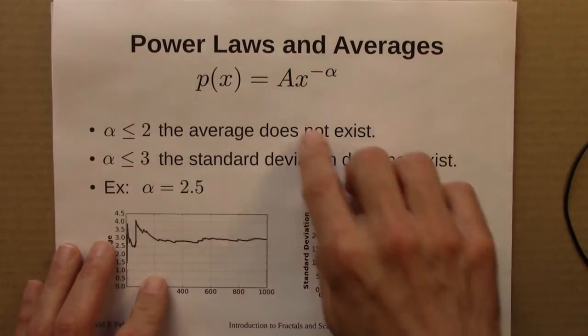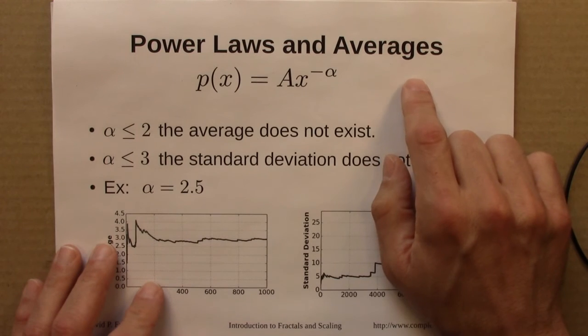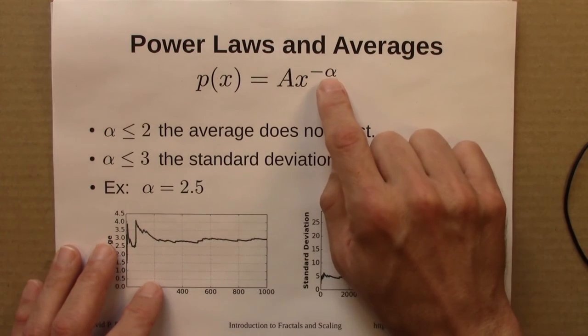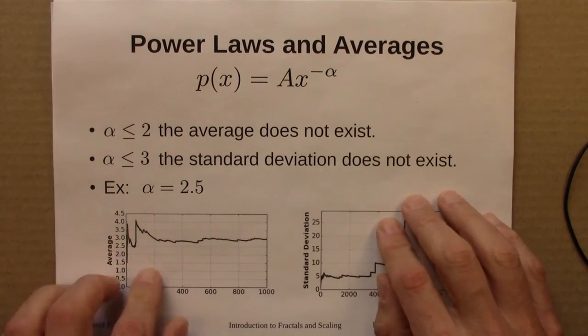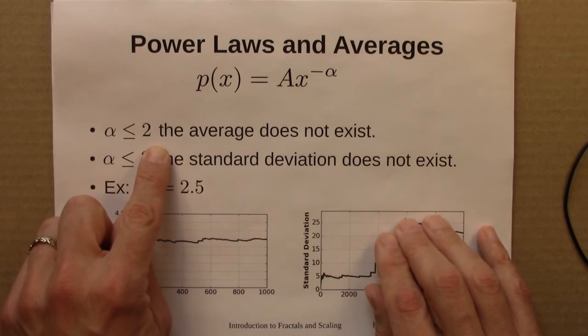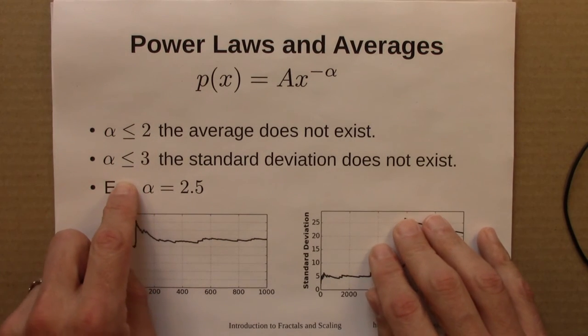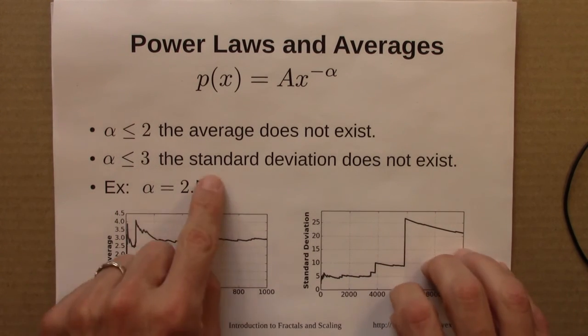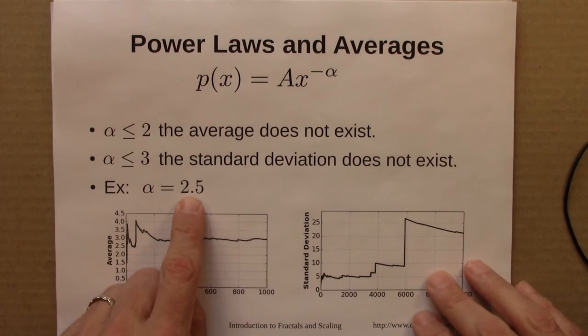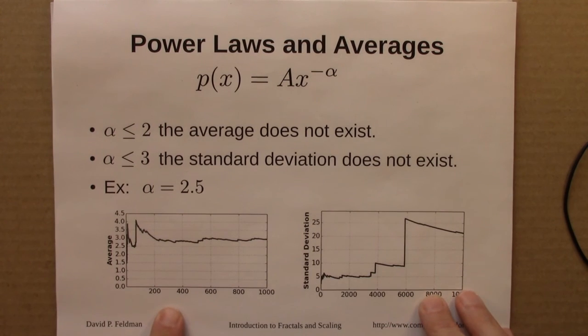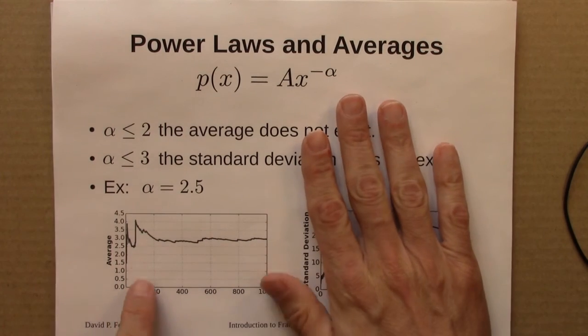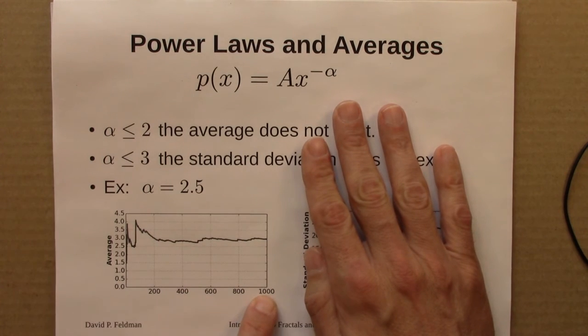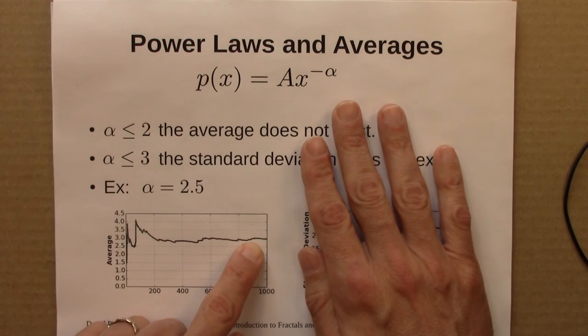And then I said, turns out that power laws have a similar property. It depends on alpha. So if alpha is less than or equal to 2, the average does not exist. And if it's less than 3, the standard deviation does not exist. So there's this interesting middle region, we looked at alpha equals 2.5, where the average exists just fine. So here I'm plotting, on the left, I'm plotting the average out to 1,000 trials. And we can see that it's approaching 3. And you can show mathematically that the average is 3 as well.